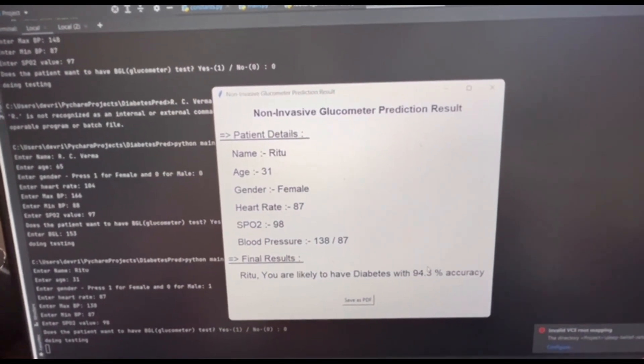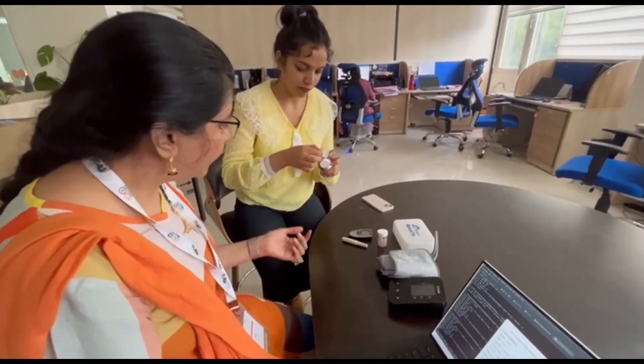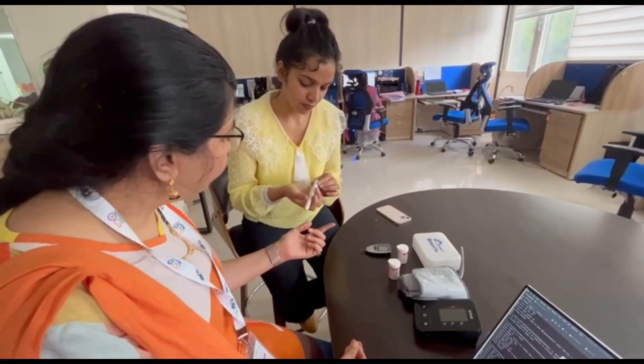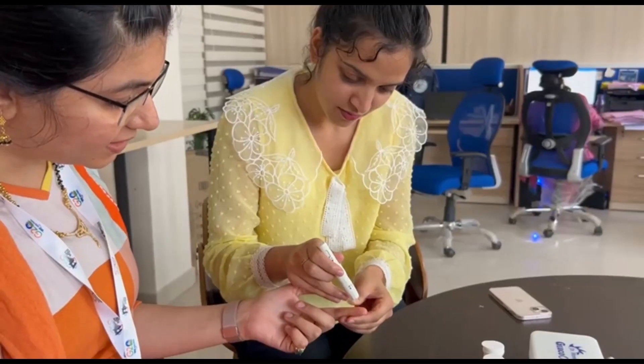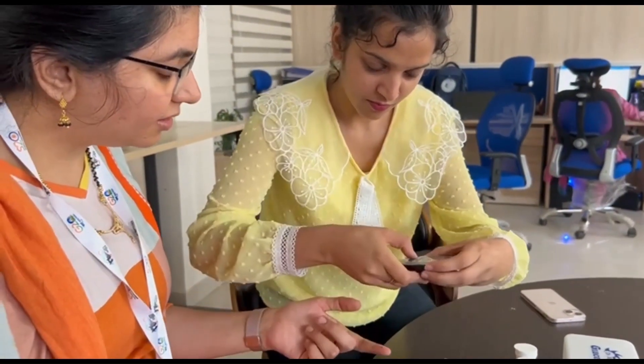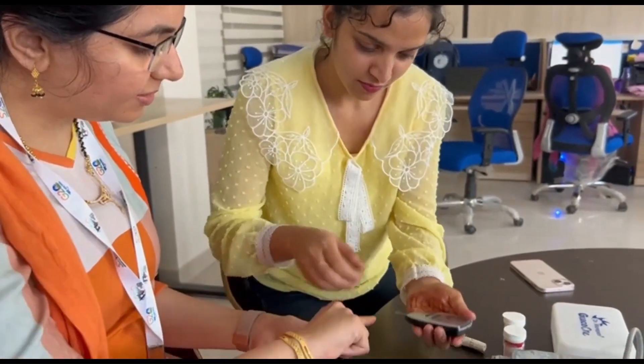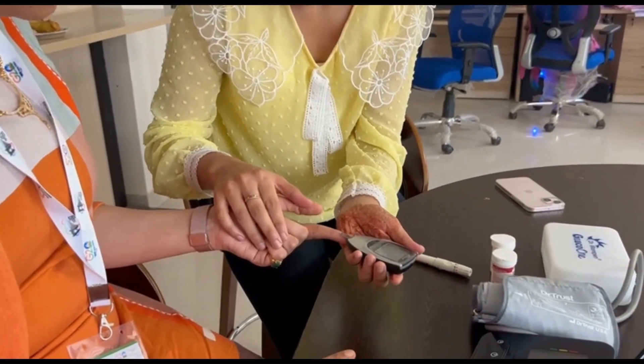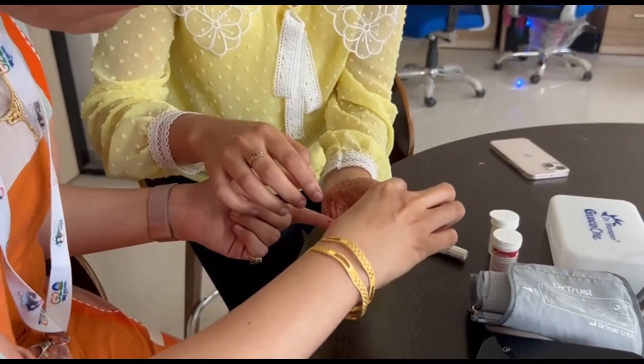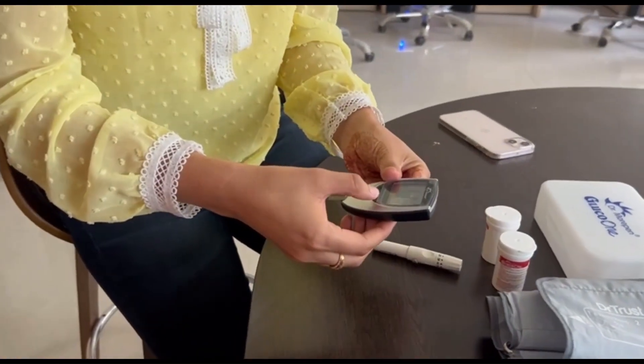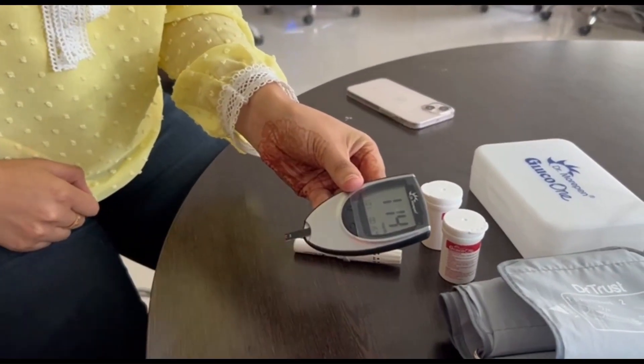Now, let's validate the same using the prick test method. We clean the tip of the finger using an alcohol-based solution and we'll be pricking the finger with a lancet and we have a blood drop ready. Now, we'll insert the test strip in the device and put the blood drop onto it and we are getting the BGL as 114 which is a borderline or pre-diabetic case.